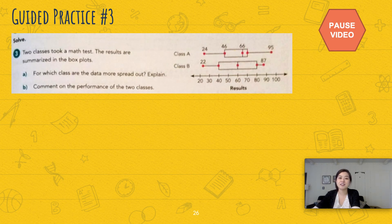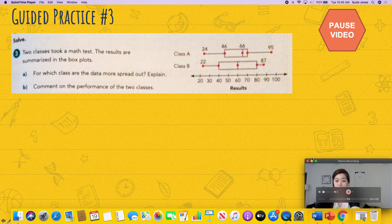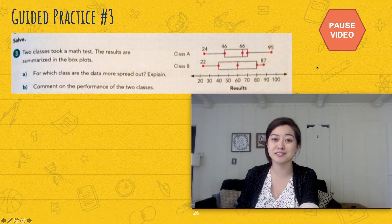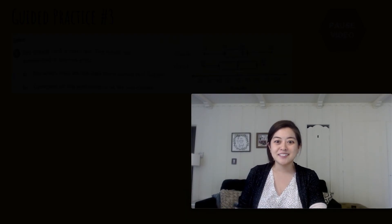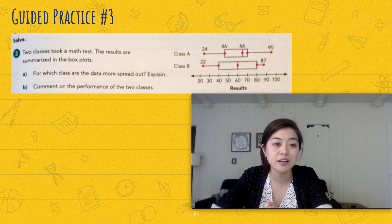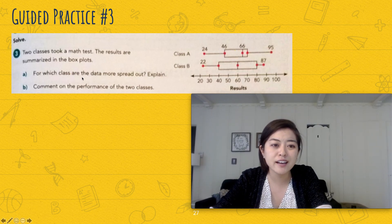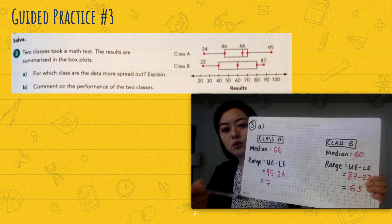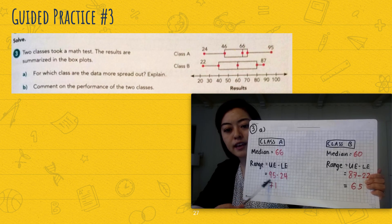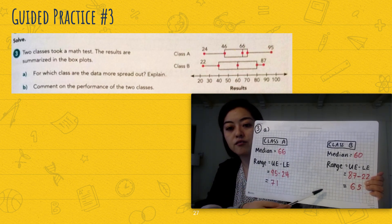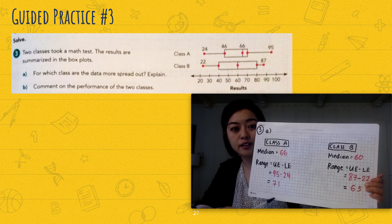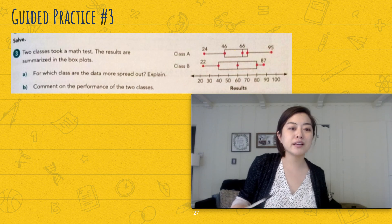Now it's your turn — try number three on your own. Two classes took a math test, and the results are in the box plots. For part A, which class has data more spread out? The range for Class A is 71 and the range for Class B is 65. Since 71 is larger, Class A has a wider spread of data.